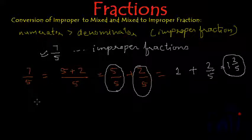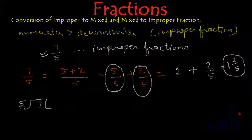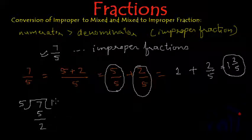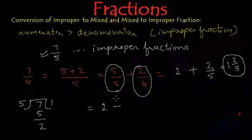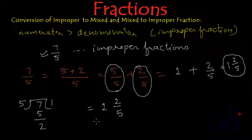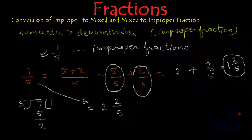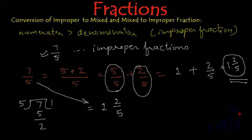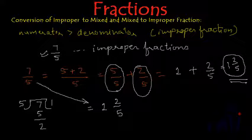Dividing 7 by 5: 7 is the numerator and 5 is the denominator. 5 goes once into 7, giving quotient 1 and remainder 2. So the mixed fraction is 1 2/5 — the remainder becomes the new numerator and the denominator stays as 5. Both methods give the same result. Multiple methods are shown so you understand the actual meaning of these fractions.